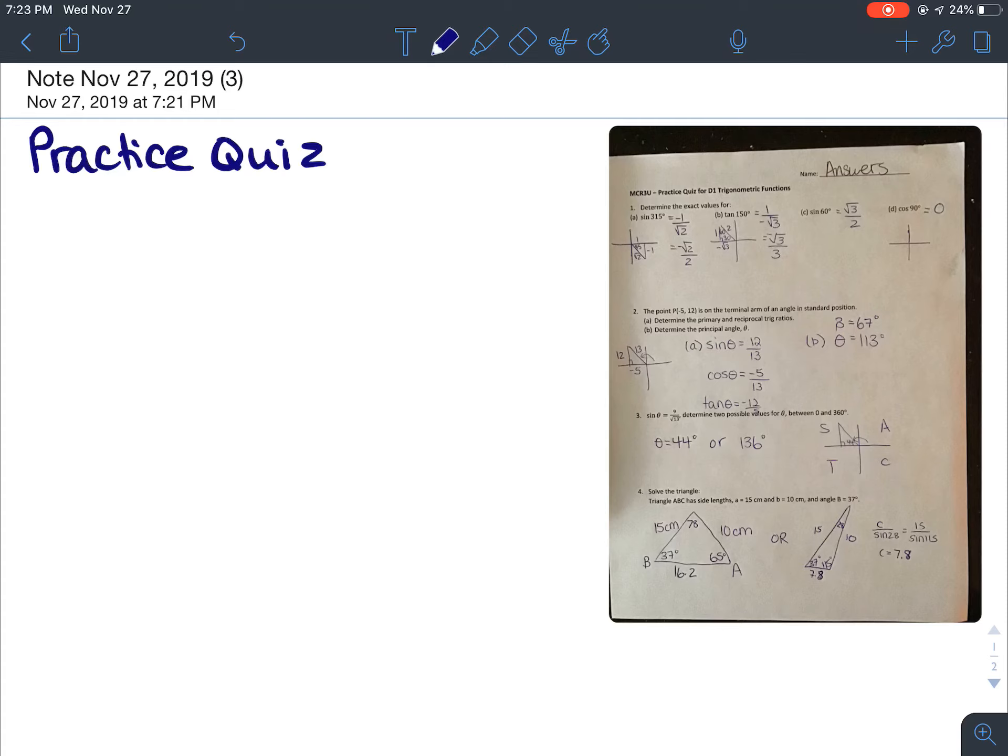This is just the answers to the practice quiz for D1. So the first question was using special triangles because it asks you for the exact value. So the first question said sine of 315 degrees.